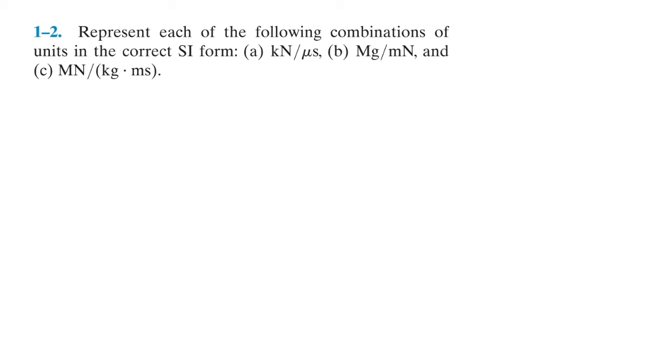Let's go ahead and do this problem. Represent each of the following combinations of units in the correct SI form. So for part A, we have kilonewtons per microsecond, so we want to convert that to per second.